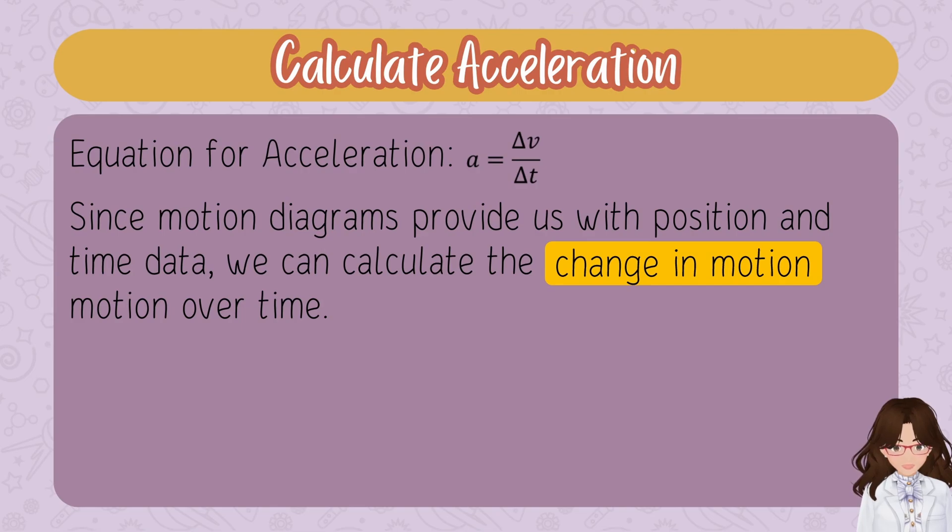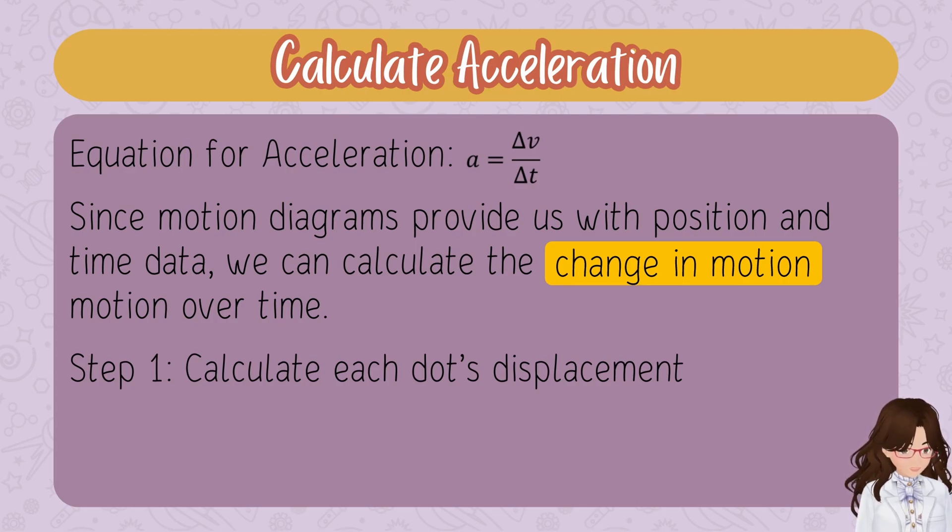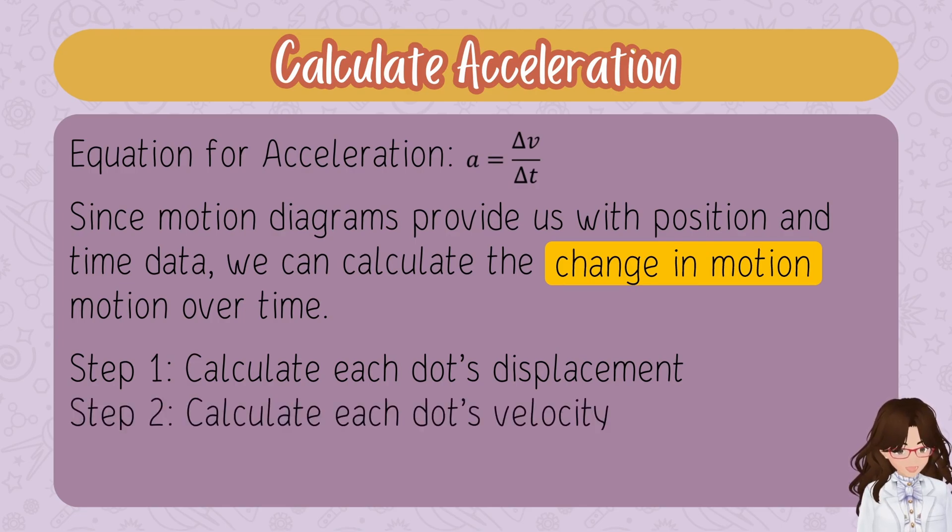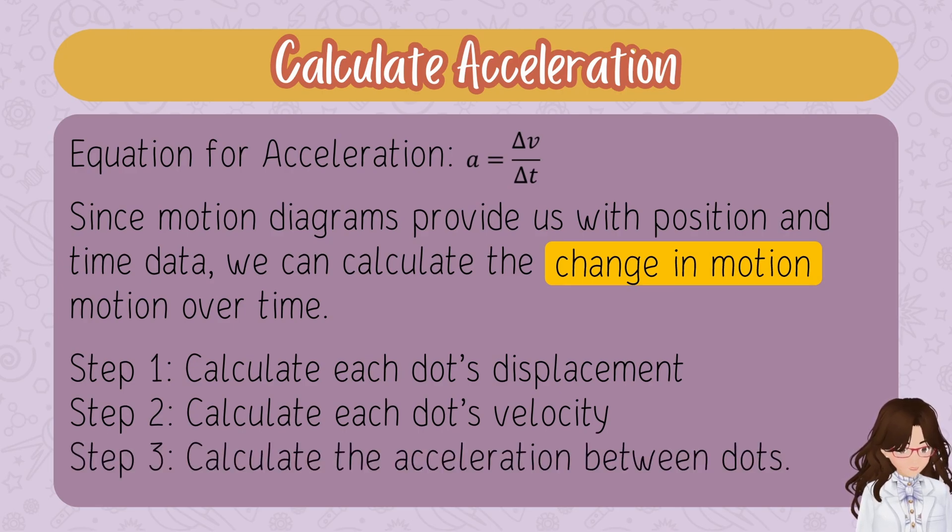We can use motion diagrams to calculate the change in an object's motion over time. There are three steps. First, calculate each dot's displacement, which we did earlier. Second, calculate each dot's velocity and denote it on the diagram. Finally, calculate the acceleration between the dots. Let's look at two examples.